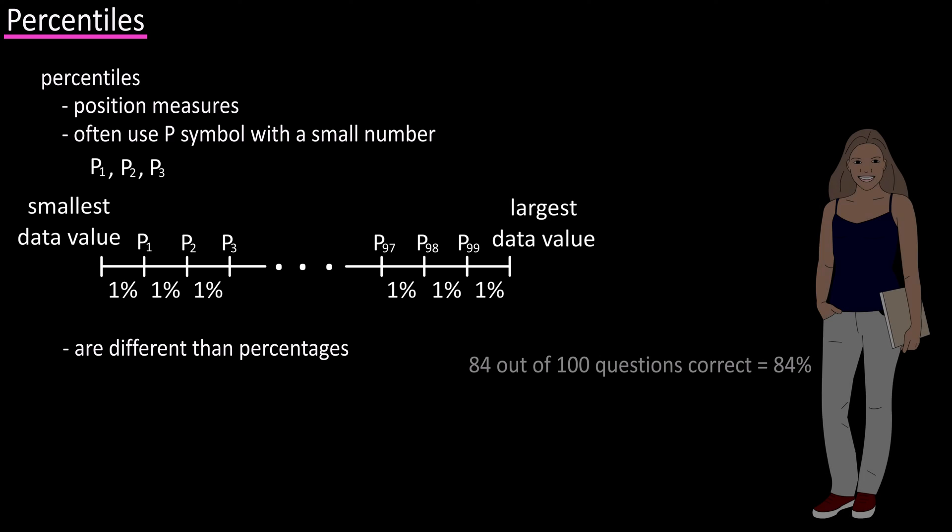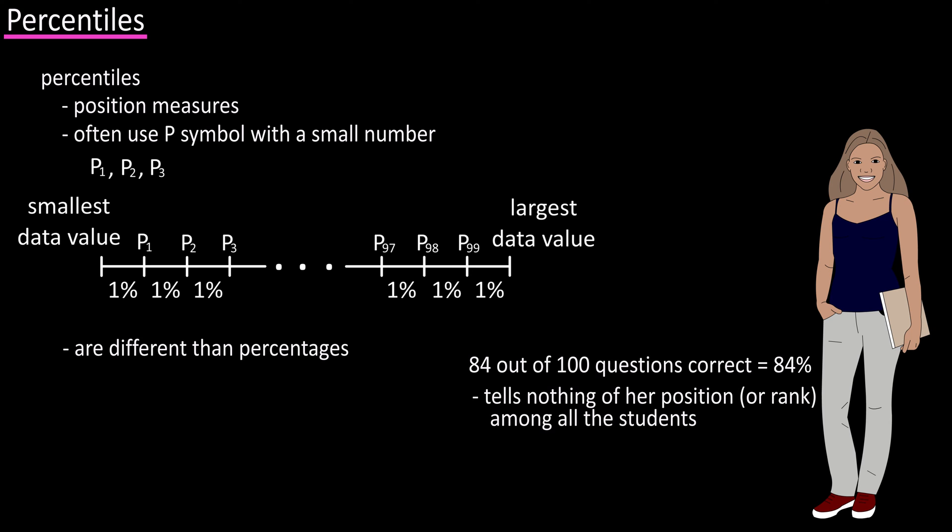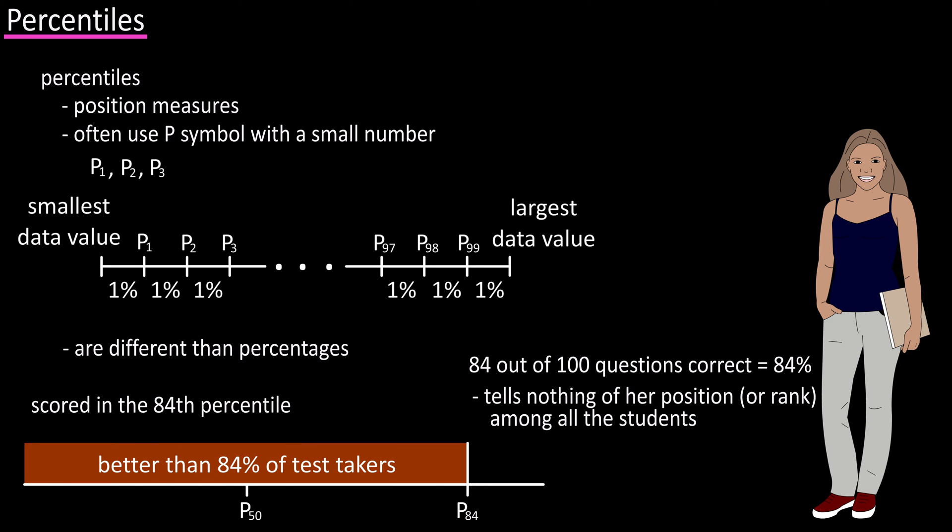For example, if a student gets 84 questions correct on a 100 question test, she obtained a percentage score of 84. This tells nothing of her position in the data set of students that took the test. However, if she scored in the 84th percentile, then she did better than 84% of the students that took the test.